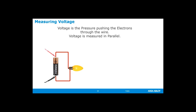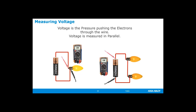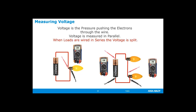Measuring voltage: voltage is the pressure pushing the electrons through the wire, and voltage is measured in parallel. When loads are wired in series, the voltage is split. Here we have a single light — no matter where we measure the voltage, it's going to measure 1.5 volts, whether at the battery or at the light. When you have two loads wired in series — two light bulbs — the voltage is now split. The total voltage measured over the battery is 1.5 volts, but when you measure one lamp at a time, each one will only show 0.75 volts. Since the lamps are the same size, they use the same amount of current, so we split the voltage.